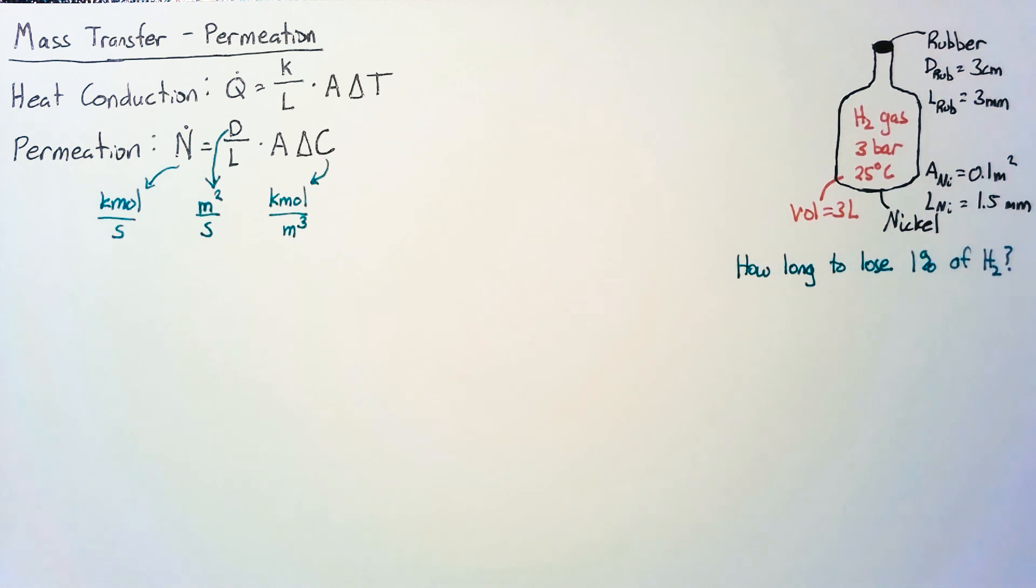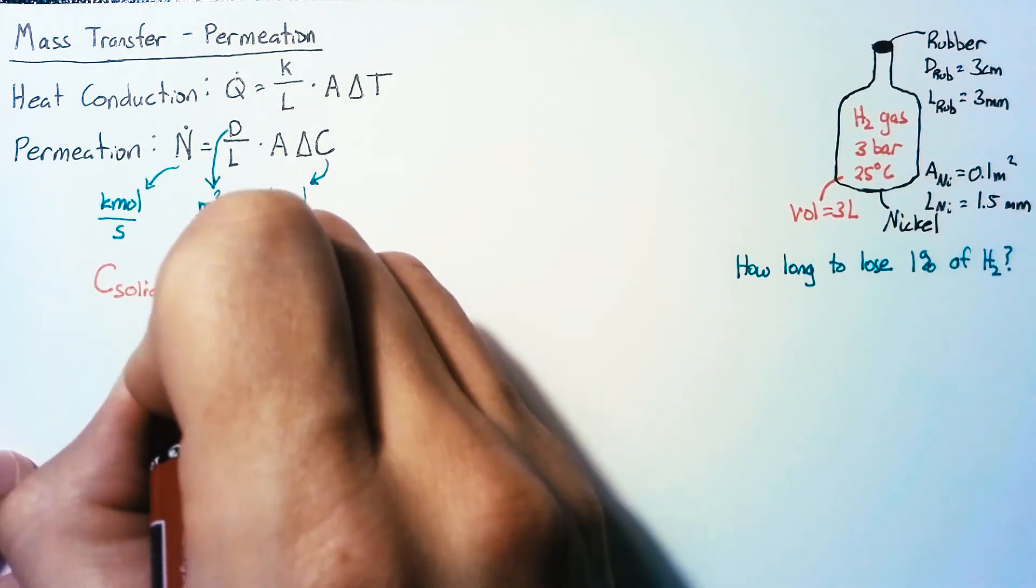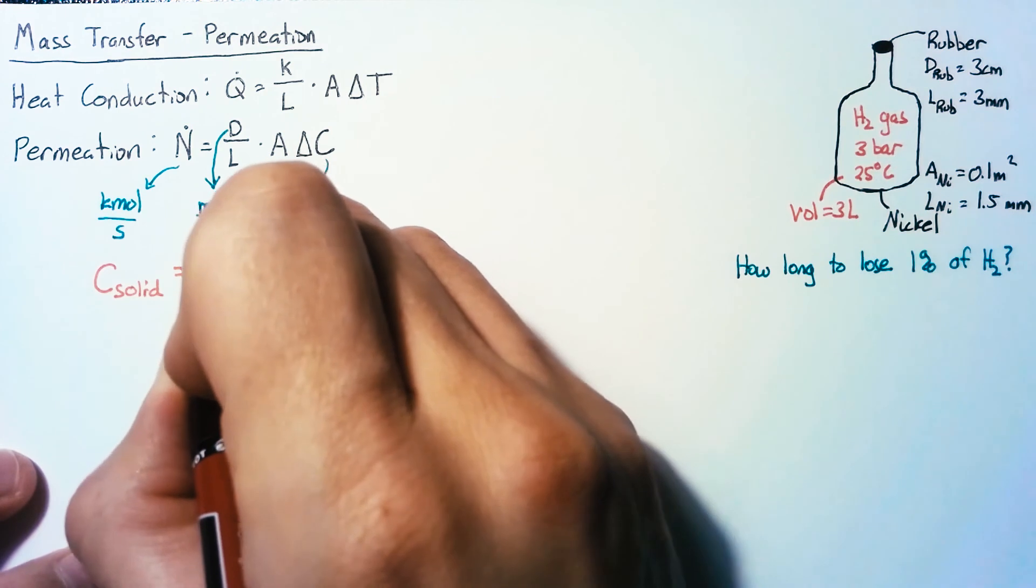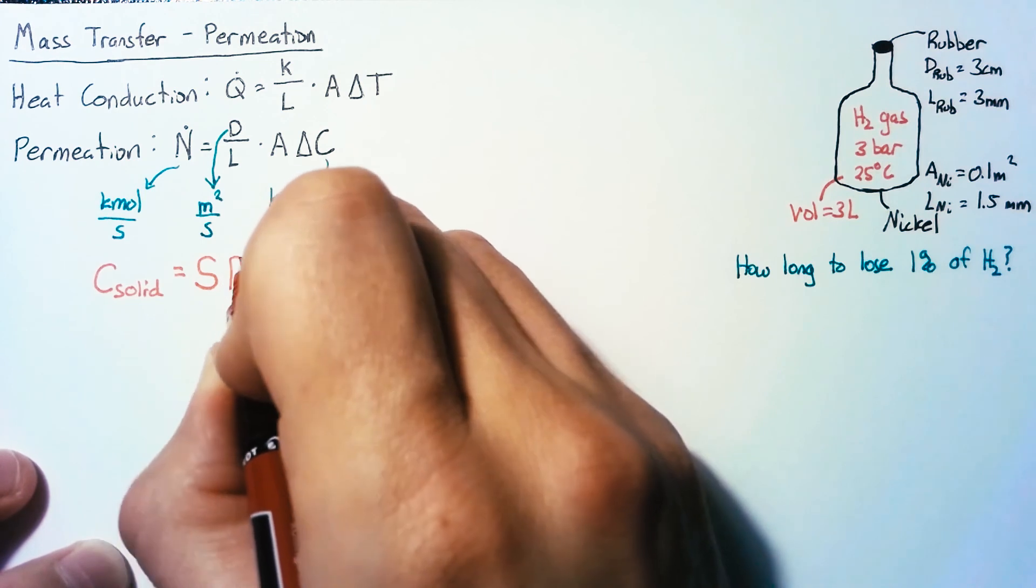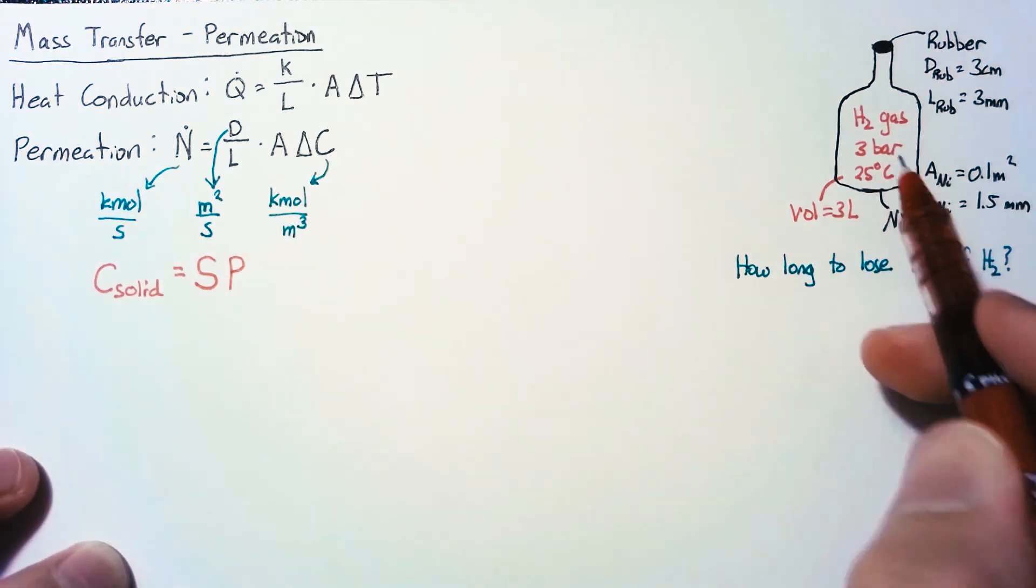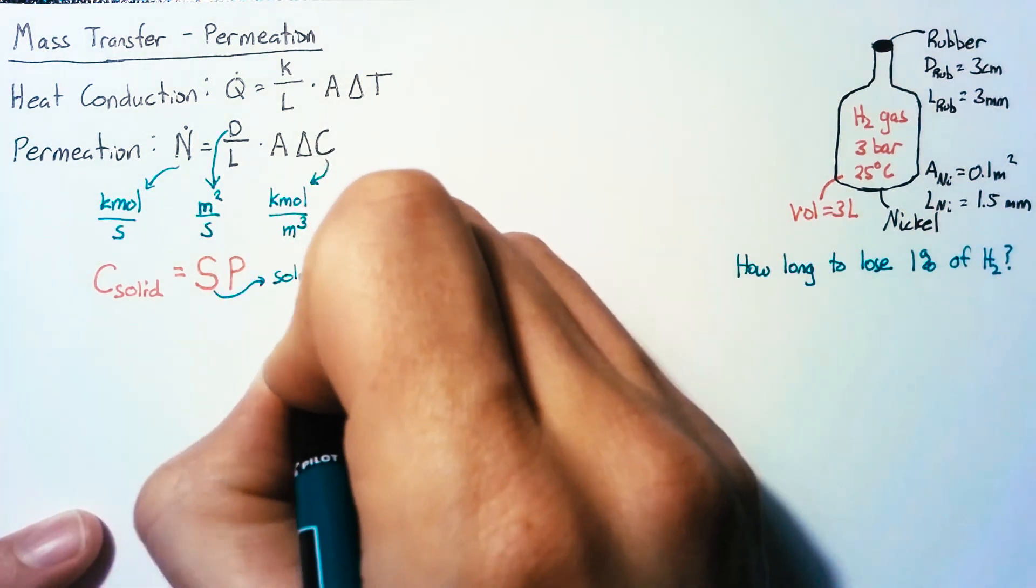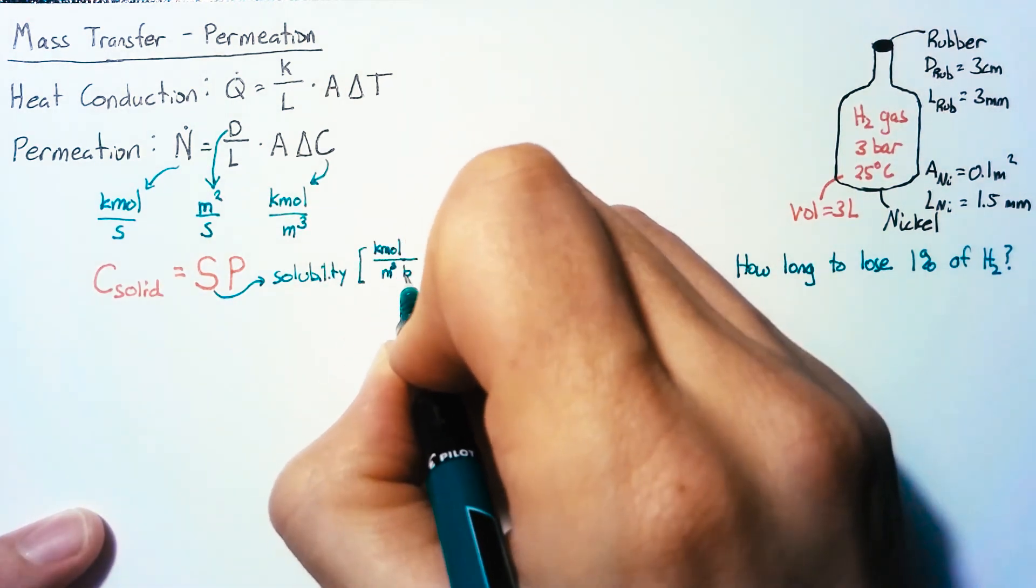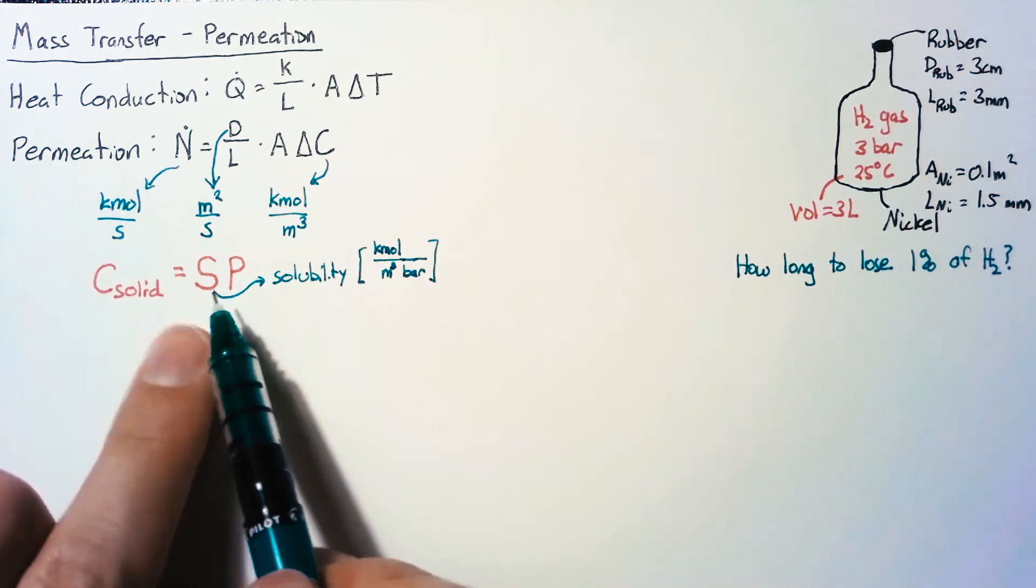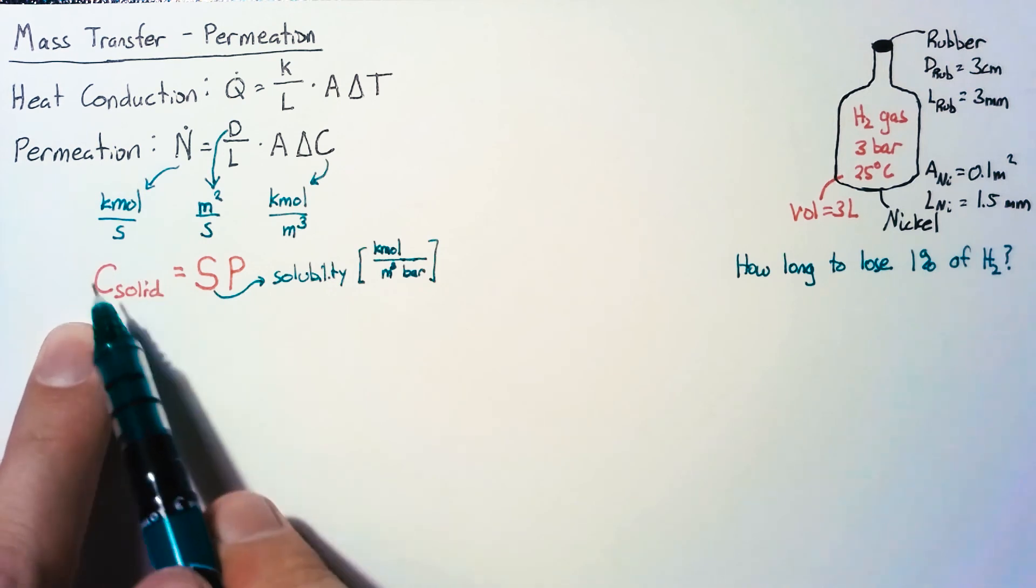Since we care about the molecular concentration in this solid, we need another constant. The concentration inside the solid equals a constant called the solubility S multiplied by the partial pressure of hydrogen. Since we only have hydrogen in the flask, the partial pressure is the same as the pressure. This solubility S has units of kilomoles per meter cubed bar.